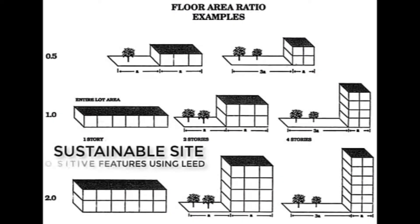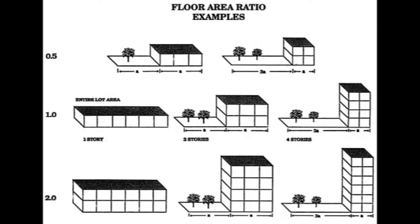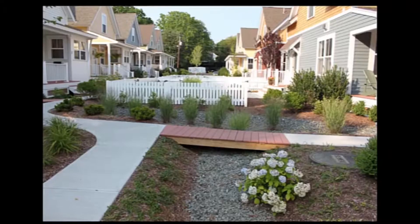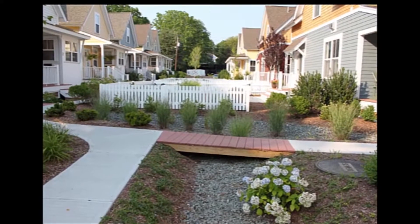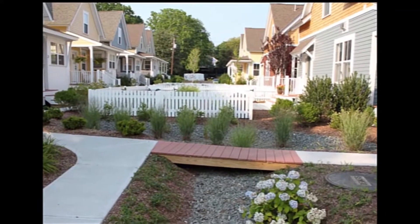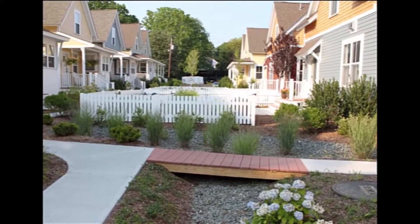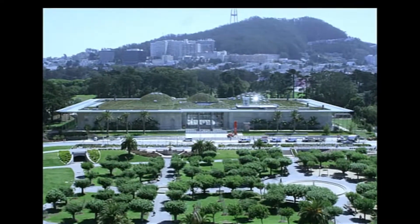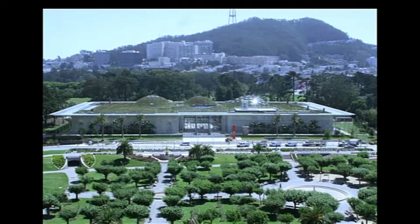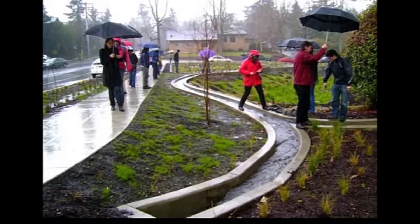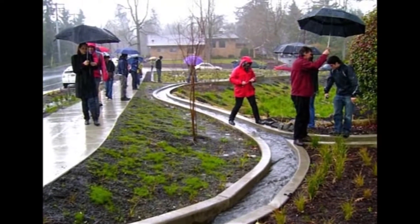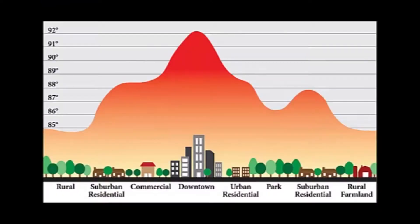Sustainable Sites: LEED focuses on constructing the building vertical rather than horizontal, which provides open space that protects habitat. Increased use of pervious surfaces in turn recharges the underground aquifer, reduces rainwater runoff, and reduces the heat island effect.